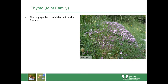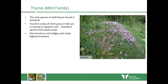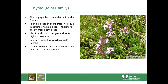Now we're on to a different family — the mint family, which includes thyme. This is the only species of wild thyme found in Scotland. It's found in areas of short grass in full sun in neutral or alkaline soils, so it's absent from peaty acidic areas. You can also find it on rock ledges and rocky highland streams. It can form large hummocks of pale lilac flowers. The leaves are small and round, and the plant doesn't taste or smell very strongly of thyme. It's a very important nectar plant for butterflies, moths and other insects in upland areas.